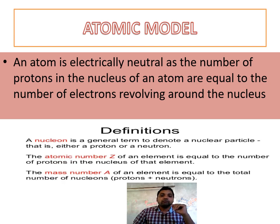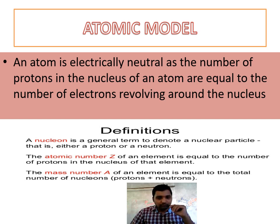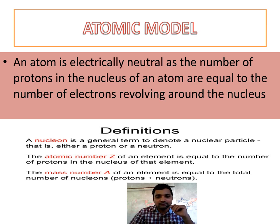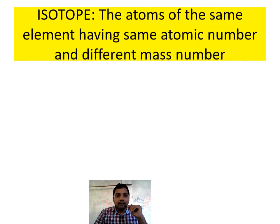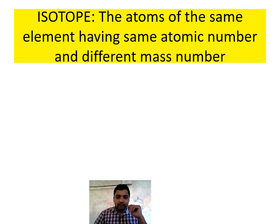Here are some definitions. First: nucleons. Nucleons is a term mainly used for nuclear particles — those present inside the nucleus, which may be protons or neutrons. Next: atomic number, which means the number of protons present in the nucleus, or the number of electrons revolving around the nucleus. Mass number means the number of protons plus the number of neutrons present inside the nucleus of an atom.